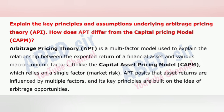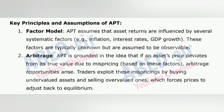Next important long question is: Explain the key principles and assumptions underlying Arbitrage Pricing Theory (APT). How does APT differ from the Capital Asset Pricing Model (CAPM)? Arbitrage Pricing Theory (APT) is a multi-factor model used to explain the relationship between the expected return of a financial asset and various macroeconomic factors. Unlike CAPM, which relies on a single factor — market risk — APT posits that asset returns are influenced by multiple factors, and its key principles are built on the idea of arbitrage opportunities.